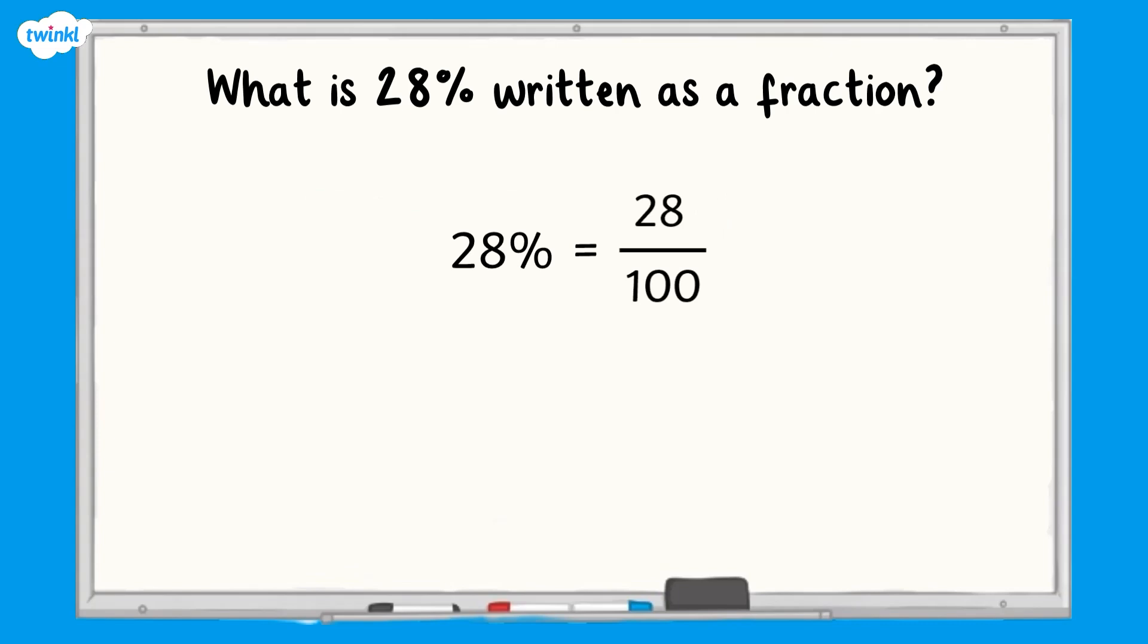But as we know, we always try and write fractions in their simplest form. So we need to look for common factors in both numbers. The highest common factor of both twenty-eight and one hundred is four. So we need to divide both the numerator and the denominator by four. When we do that we get seven twenty-fifths. So twenty-eight percent as a fraction is seven twenty-fifths.